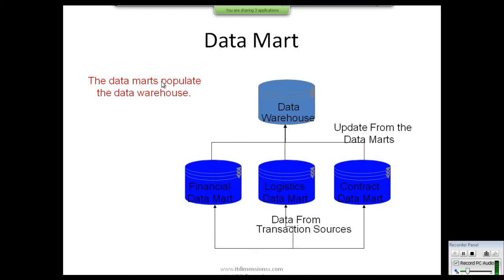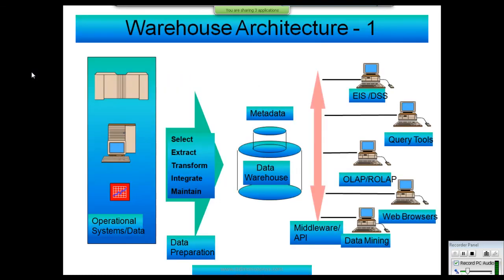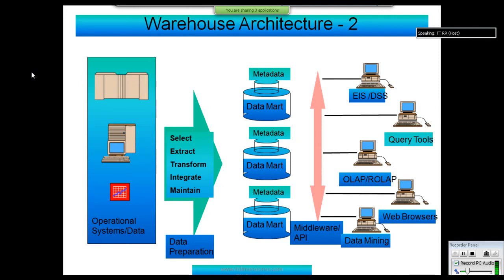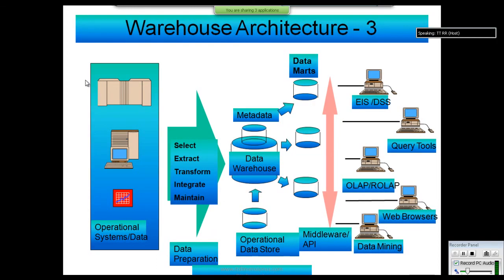The second concept is that data comes directly into each data mart, thereby populating the data warehouse — the data marts populate the data warehouse. These are the two main concepts for populating a data warehouse. According to the data mart concept, the data warehouse architecture is further divided. One architecture shows data going from the source into each data mart first, thereby populating the data warehouse. In the other structure, data from different sources is extracted, transformed, and loaded into the data warehouse first, which then populates each data mart.